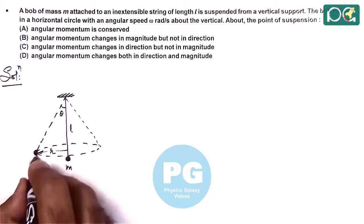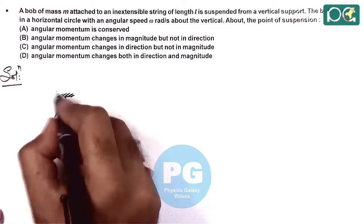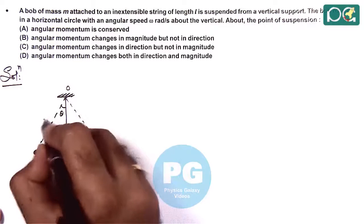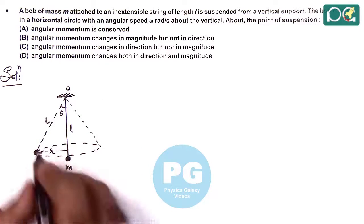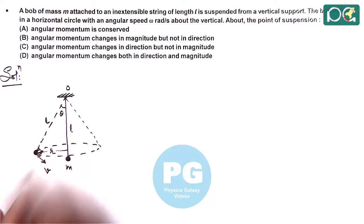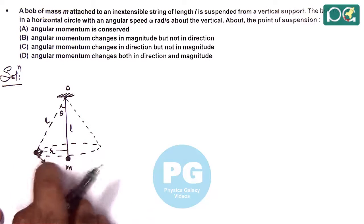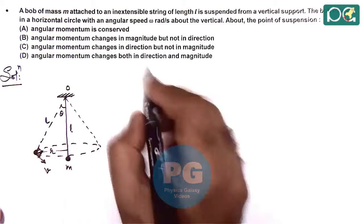Now in this situation, its velocity would be tangential to the circle. And if we talk about the point of suspension O, this length is L, which is at an angle 90 degrees with the direction of velocity. You can see the projected length of this cone is at an angle 90 degrees with the velocity.